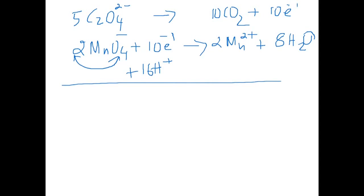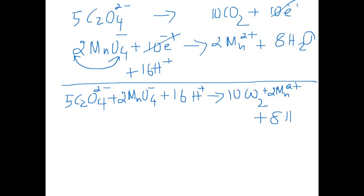Adding the 2 equations right now should give you a completely balanced equation. So we would rewrite it as 5 C2O4^2- plus 2 MnO4^- plus 16 H^+ gives you, the electrons are cancelled because they are common, 10 CO2 plus 2 Mn^2+ plus 8 H2O.